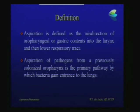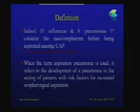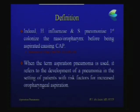Aspiration of pathogens from a previously colonized oropharynx is the primary pathway by which bacteria enter the lung — and this is not only in the elderly, but in most of our community-acquired pneumonia patients. The most common pathogens, Haemophilus and Streptococcus pneumoniae, first start by colonizing the nasopharynx before they end up aspirating and causing community-acquired pneumonia. When we use the term aspiration pneumonia, we refer to pneumonia developing in a patient who has risk factors for increased oropharyngeal aspiration.